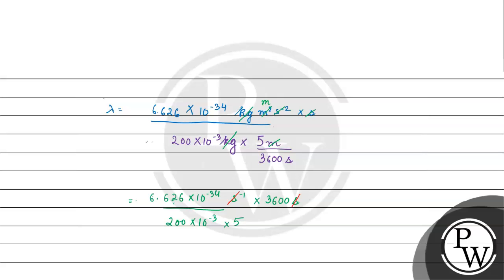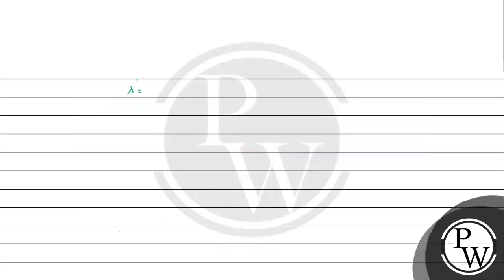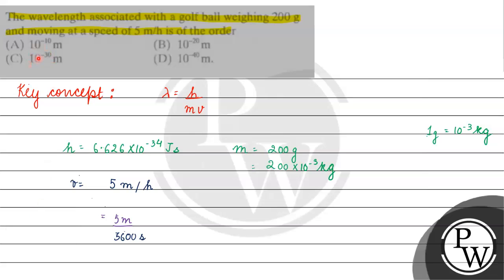We have 6.626 into 10 raised to the power minus 34 into 3600 meters. When we solve it, we get 23853.6 into 10 raised to the power minus 34 meters. Let's solve further: 2.38536 into 10 raised to the power minus 30 meters. The wavelength order is 10 to the power minus 30 meters. The correct answer for this question will be option C. I hope you understood it well, thank you and all the best.